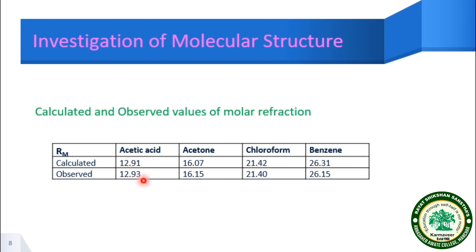Similarly, consider acetone, chloroform (CHCl₃), and benzene (C₆H₆). According to their molecular formulas and molecular weights, you can calculate molar refraction using atomic refraction equivalents and compare these with observed values. The values are found to be very comparable and nearly identical. For simple molecules, this method is very useful, and one can confirm which type of structure to assign to different substances or molecules.